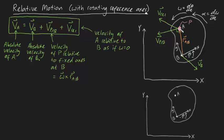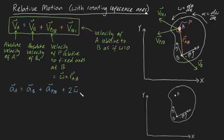Now let's talk about acceleration. The absolute acceleration of point A equals the absolute acceleration of B, plus the acceleration of P relative to B, plus the Coriolis acceleration — which is 2 times omega cross v_rel — plus a_rel. There are a lot of terms here, so let me break each one up individually.